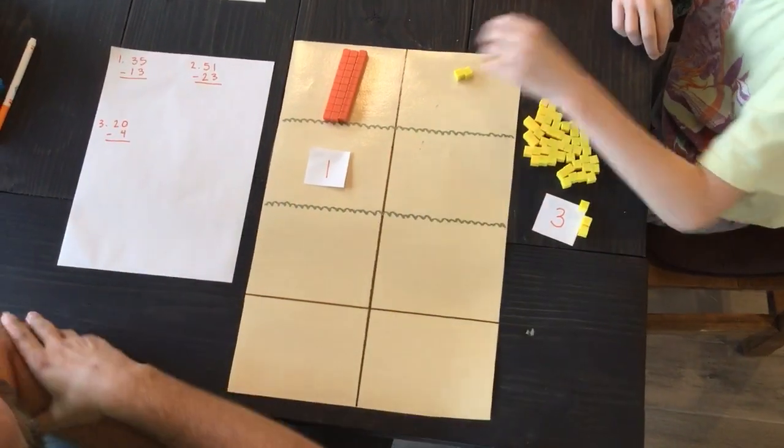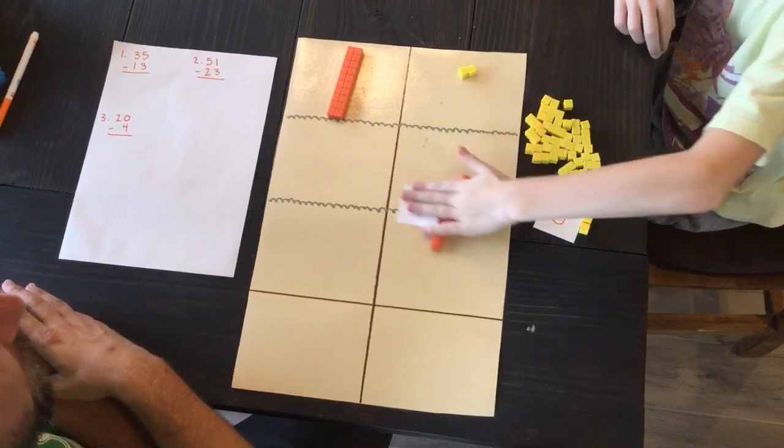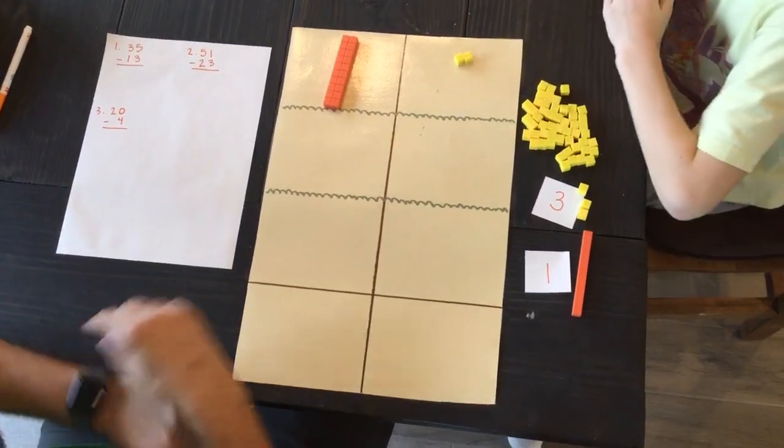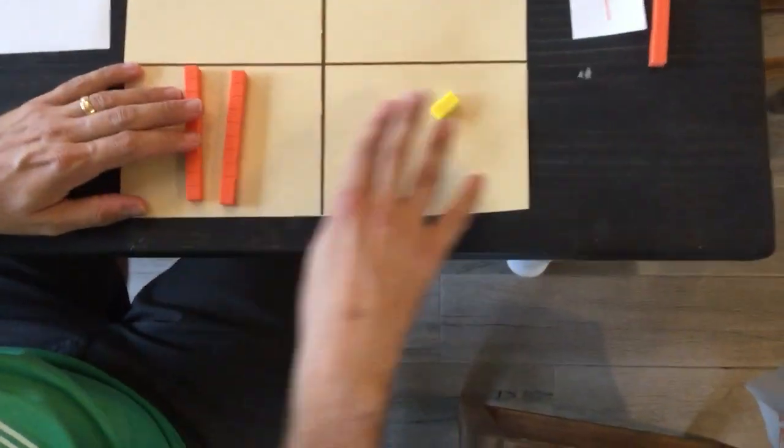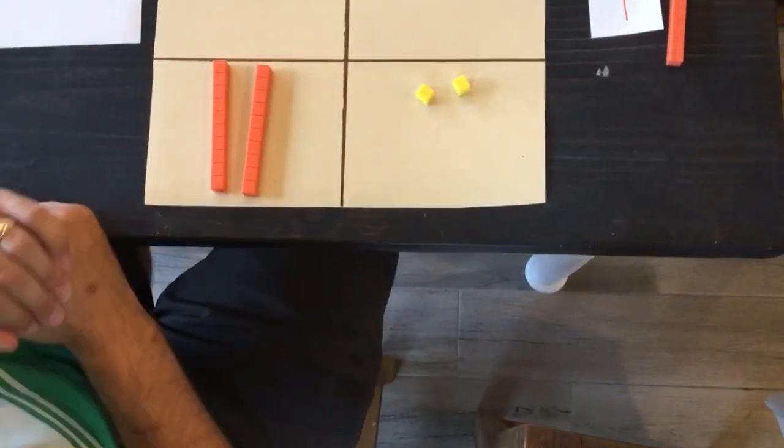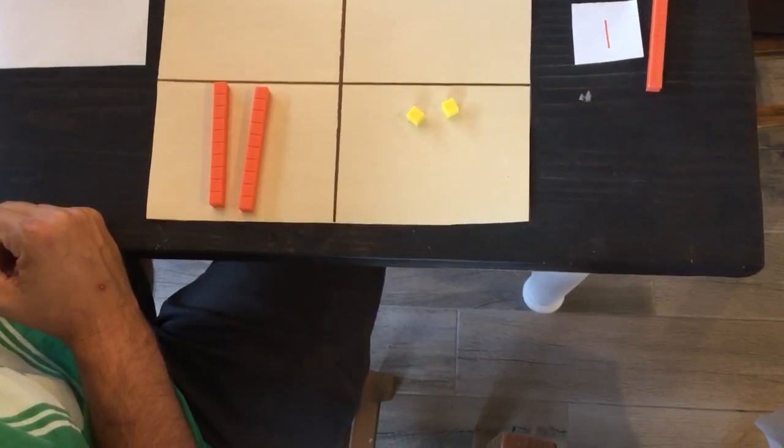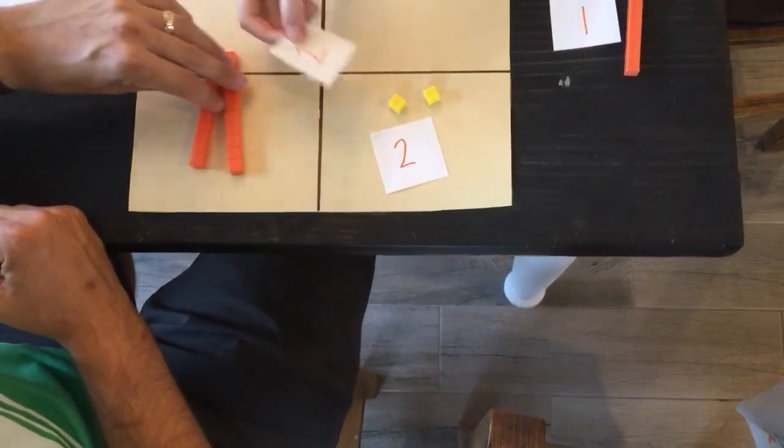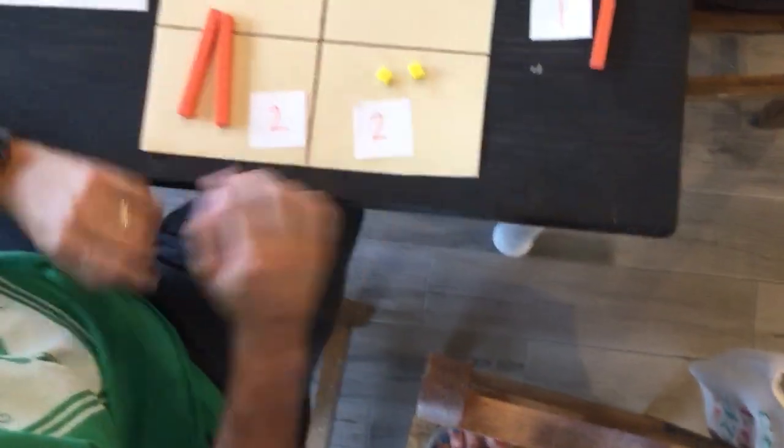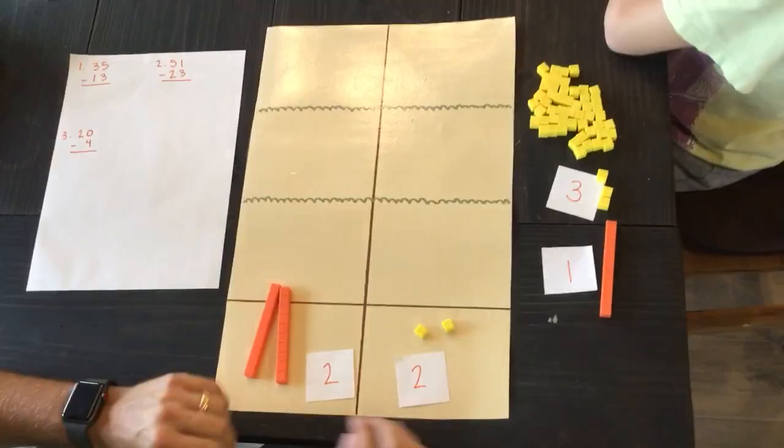How about our tens place? Do I have enough tens to take away one? Yes, you have enough. I do. Let's take that away. So we can bring this all the way down. And what do we end up having as our answer? We are ending up having 22. Very good. So did we have to do any regrouping on that one? No. We didn't.